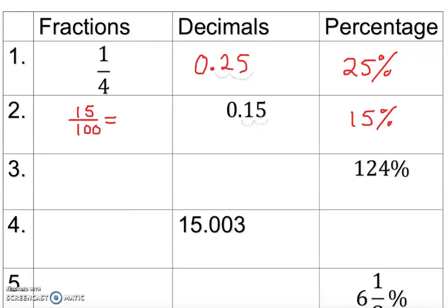We have 15 over 100, and we must reduce it. We can see there is a common factor of 5, so dividing both gives us 3 on top and 20 on the bottom. So the fraction is 3 over 20. That's how you convert into a fraction.